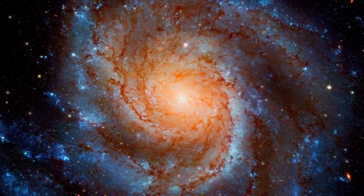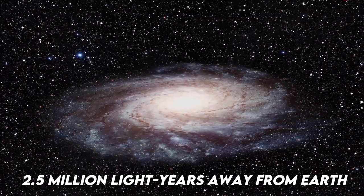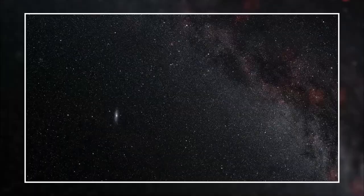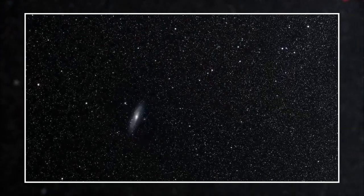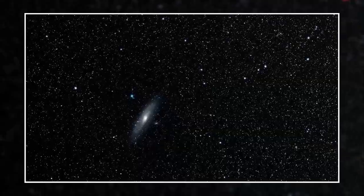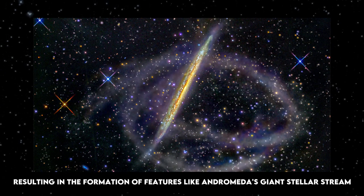The nearest massive neighbor of the Milky Way, located 2.5 million light-years away from Earth, is Andromeda. It's assumed that it interacted with globular clusters and other galaxies several times, resulting in the formation of features like Andromeda's giant stellar stream.